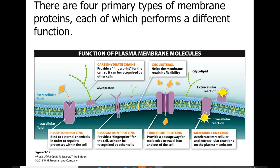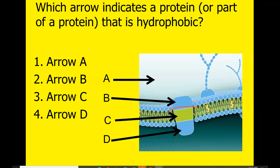Cholesterols embedded within the cell membrane help maintain flexibility and prevent the membrane from becoming too fluid or floppy, acting as a kind of antifreeze. If it gets too hot, it could cause the cell membrane to become rigid. The hydrophobic section — labeled C — goes straight through the center with the phospholipid tails.